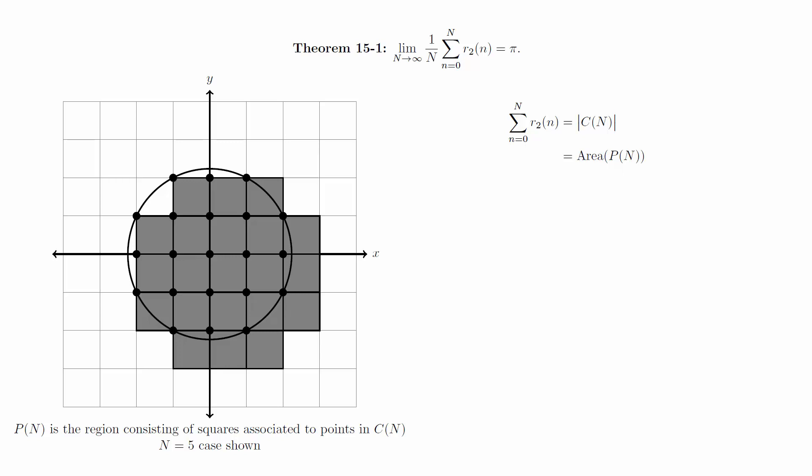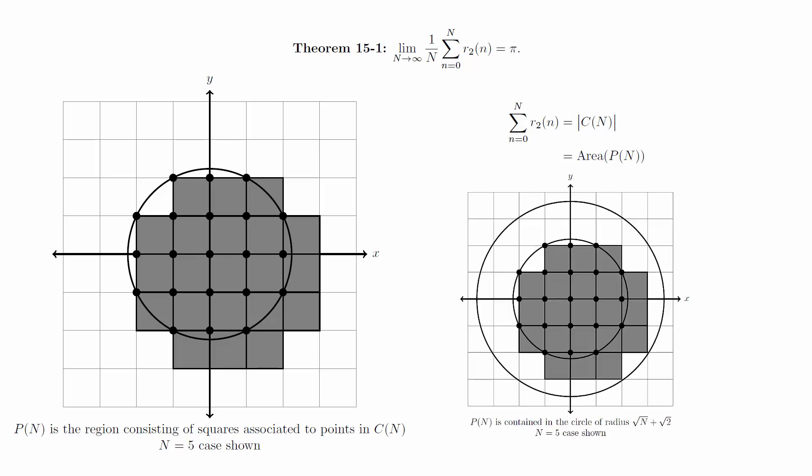We will now bound the area of this region above and below using circles. Consider the regions p(n) and c(n). Notice that each point in p(n) is no more than a distance of square root of 2 away from a lattice point in c(n). This implies that p(n) must be fully contained inside the circle with radius square root of n plus square root of 2.